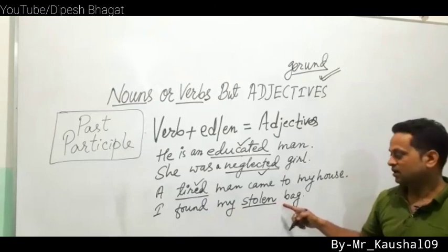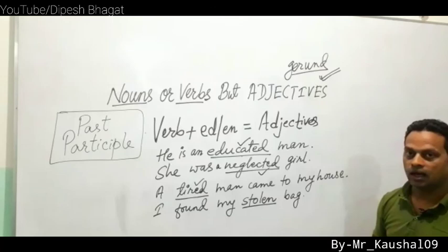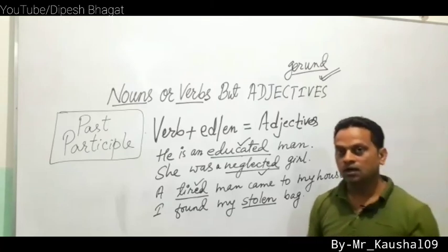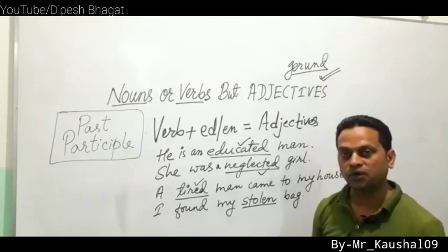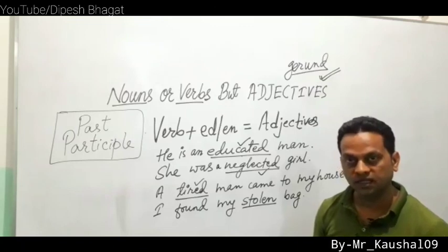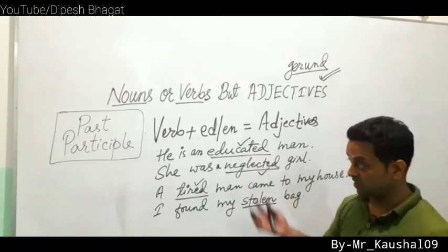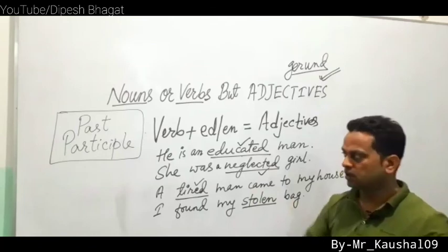So in this way we can identify adjectives. Adjectives are words that describe nouns or pronouns — showing quality, purpose, and material. So adjectives (viceshan) are words that show the quality, purpose, or material of a noun or pronoun.